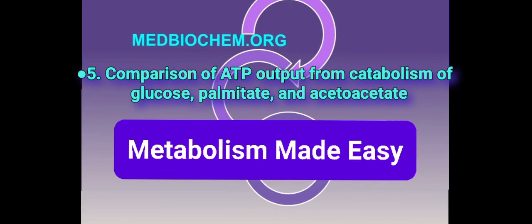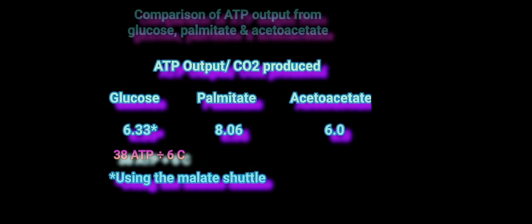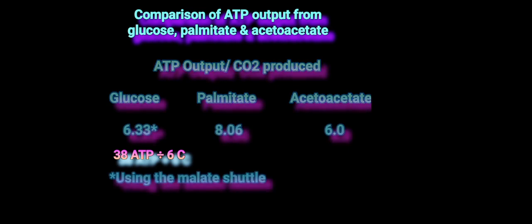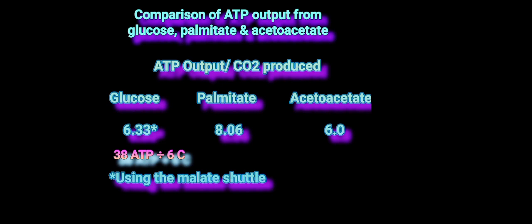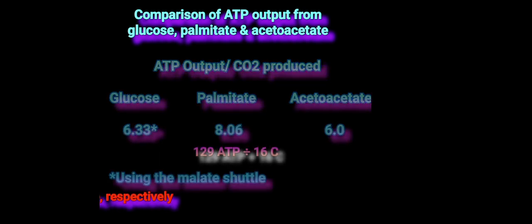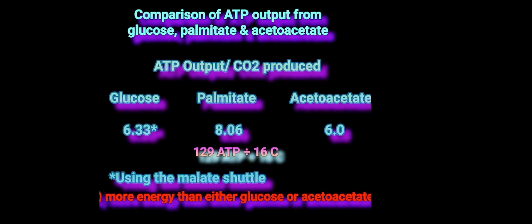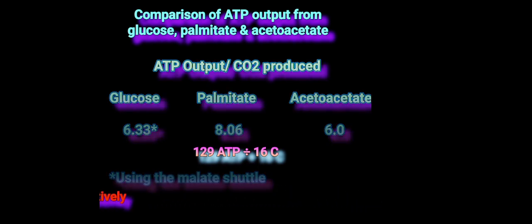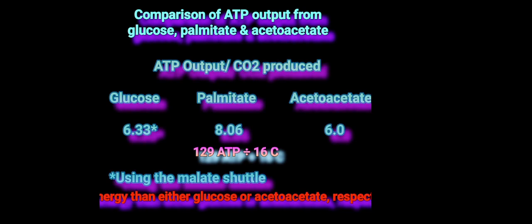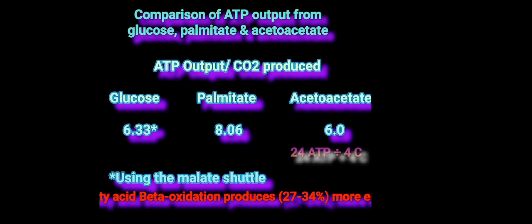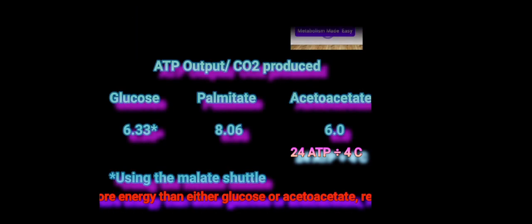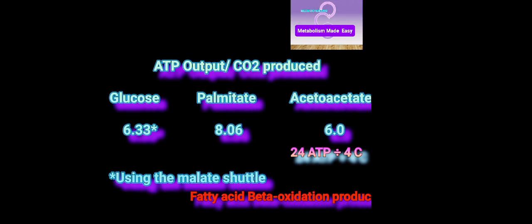To summarize the comparison: complete oxidation of glucose through glycolysis, pyruvate dehydrogenase, and the TCA cycle produces a maximum of 38 ATPs, giving 6.33 ATPs per CO2 produced. Complete oxidation of palmitate, a 16-carbon fatty acid, through beta oxidation gives 129 ATPs, or 8.06 ATPs per CO2 produced. Complete oxidation of acetate through the TCA cycle produces 24 ATPs; dividing 24 ATPs by 4 carbons gives 6 ATPs per CO2 produced.